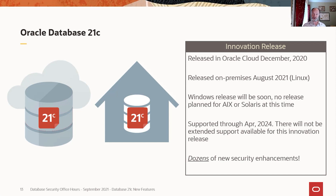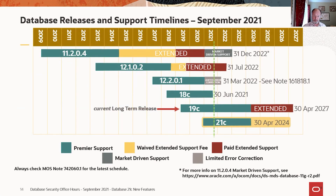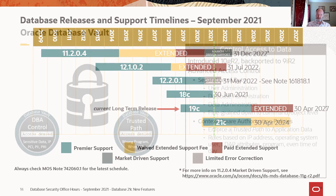We don't expect most of our customers to adopt 21c. Everyone should be on 19c or moving towards 19c, which is our current long-term support release. There are dozens of new security enhancements in 21c, and I'm not going to cover them all, but I did cherry pick some of the most interesting ones. Just again to point out: 21c is a short lifespan innovation release. 19c is our long-term release, with extended support available all the way out to 2027. 21c support ends in 2024.